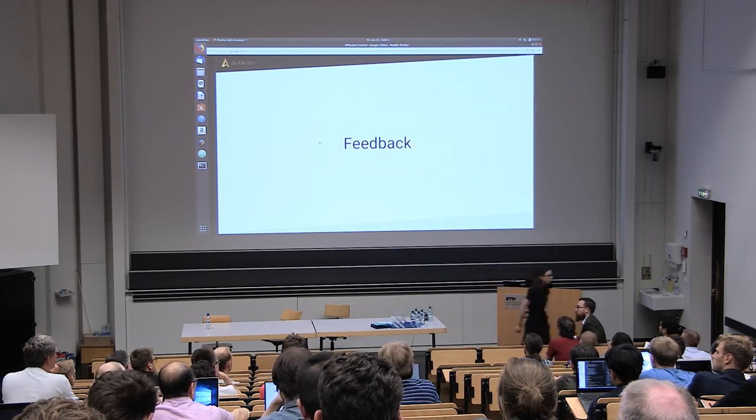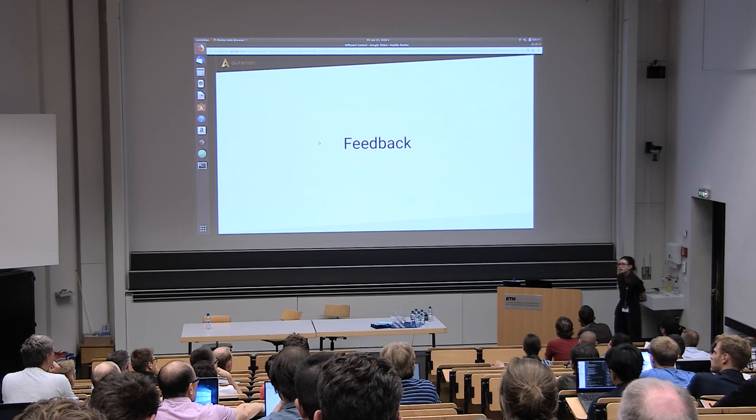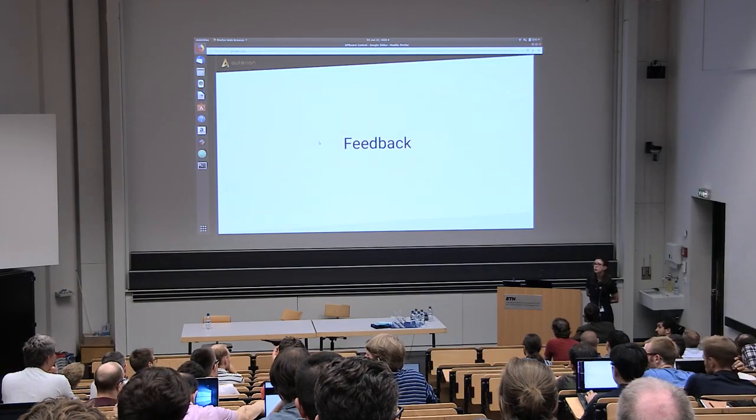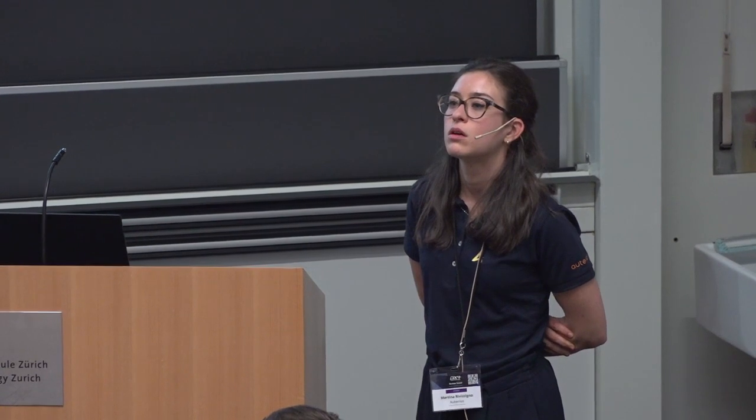On the PX4 avoidance project there are two obstacle avoidance algorithms: the local planner and the global planner. One computes an octomap for a more global approach, the other is a more local approach. The video shown was from the local planner. Recently we also upstreamed the safe landing planner. If you want to use your own algorithm, you can customize any of the existing algorithms by going through the code, understanding what it does, and changing parameters to enable whatever you want.